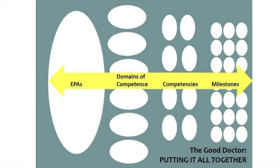We can start with the EPAs because that's really what we're talking about. Even in the definition, a criteria for an EPA was the integration of competencies — it requires the integration of competencies, most commonly across domains. If you look at the figure, each EPA can be mapped to two, three, or four domains of competence, and those domains will vary depending on what the activity is.